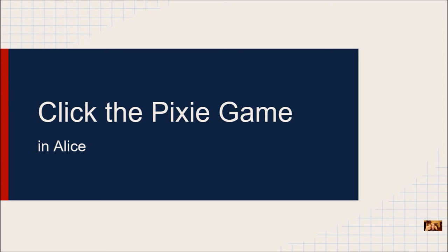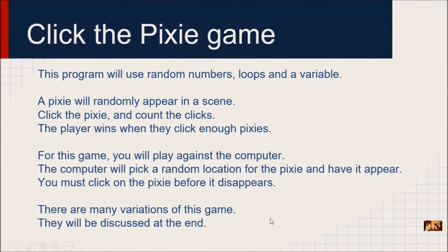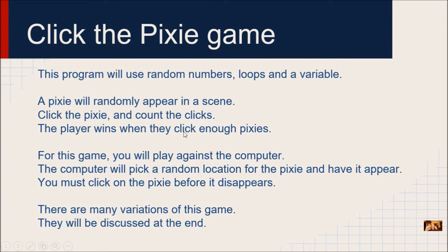The first game is going to be the Click the Pixie Game. This program is going to use random numbers, a loop, and a variable. We're going to start out fairly simple, and this game will be really easy to customize. We're going to have a pixie — or you can pick any object or animal — that will randomly appear somewhere on the screen. We'll use a mouse click event to click on it, and count every time we actually click on the animal. Then you determine how many clicks you need to win — you're either going to win or lose.